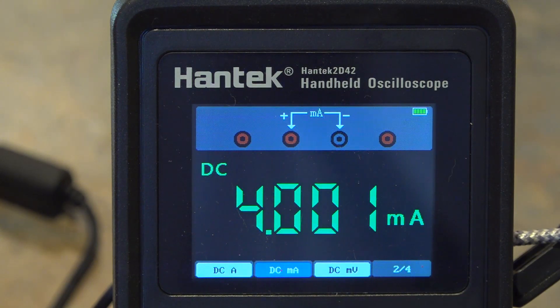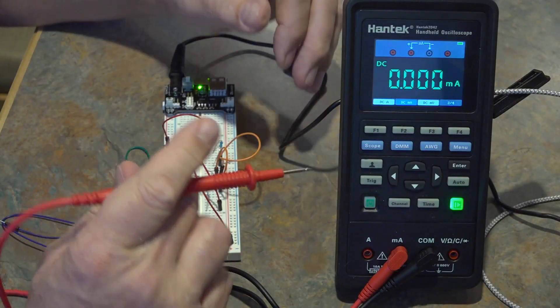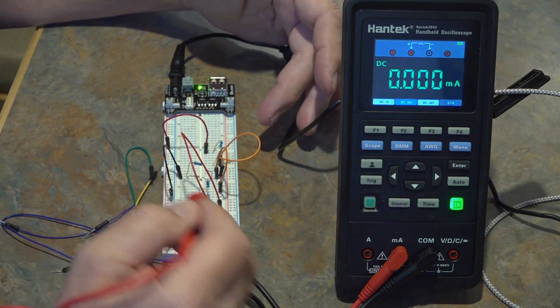And it doesn't matter whether I measure that before or after the 1k resistor, the current flowing through that resistor is the same on both sides. So now I'm going to measure node B which is the 3.3 volt power supply.